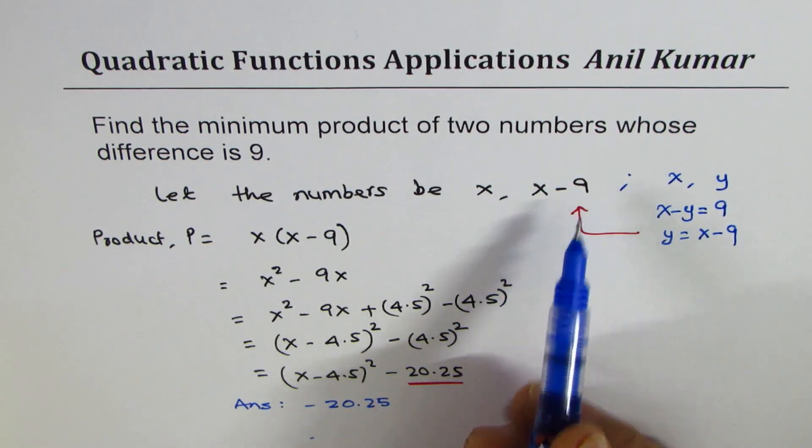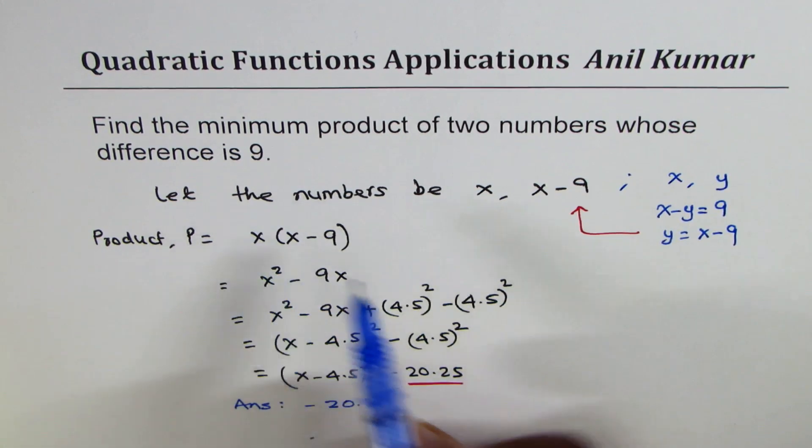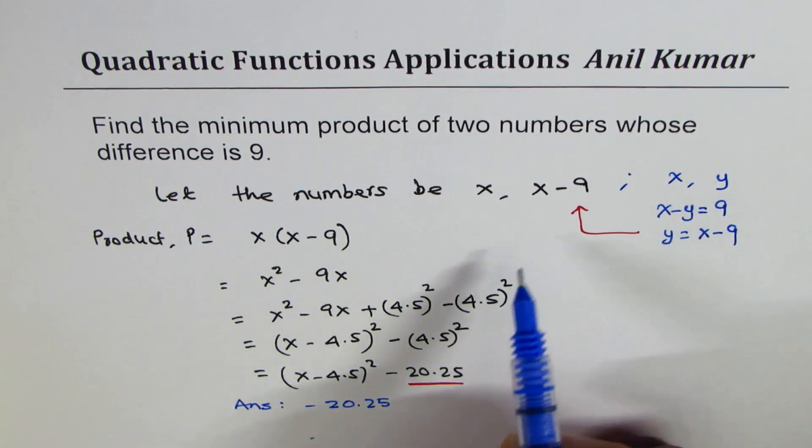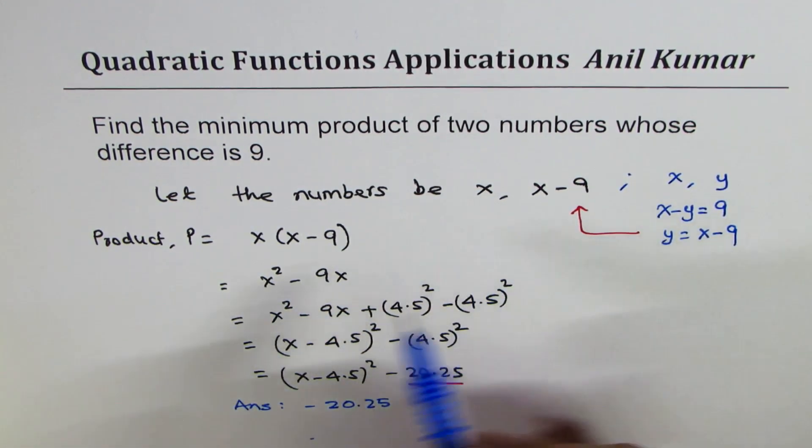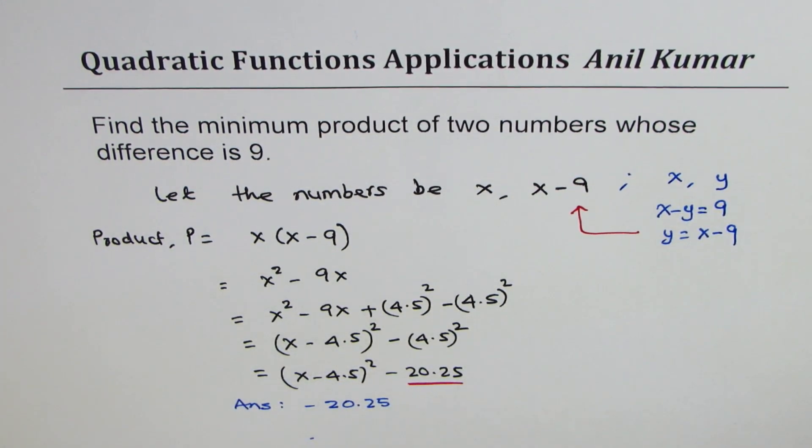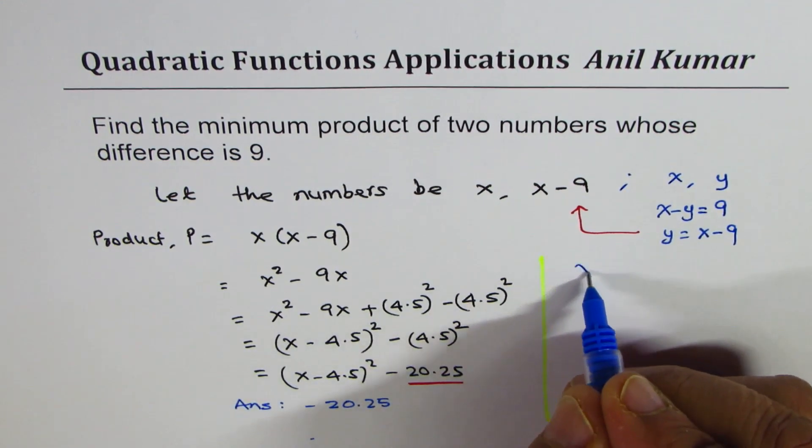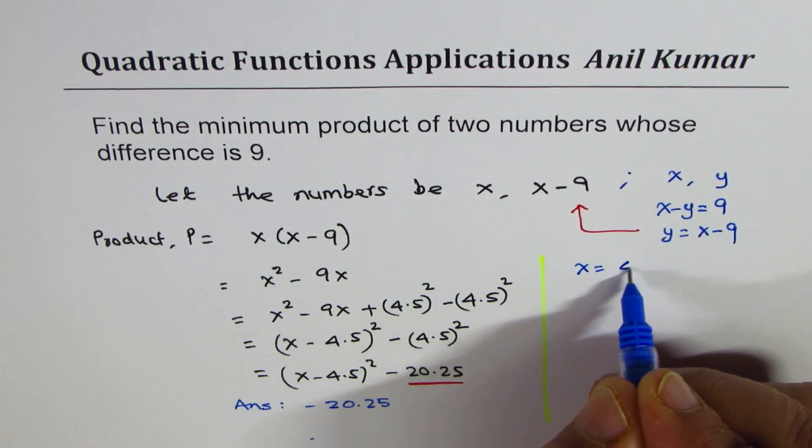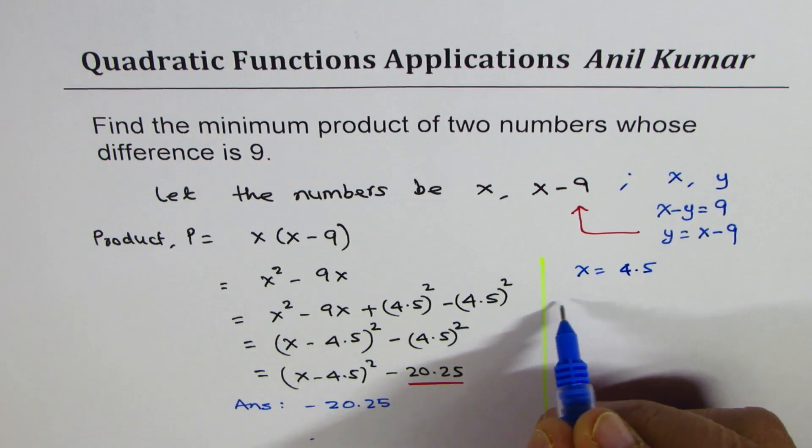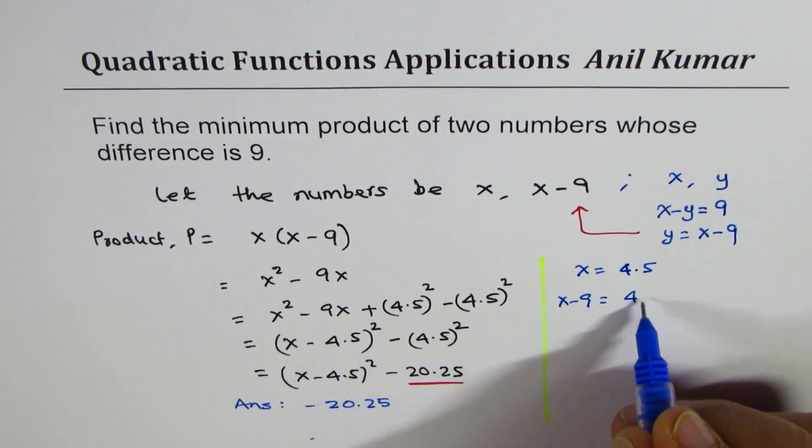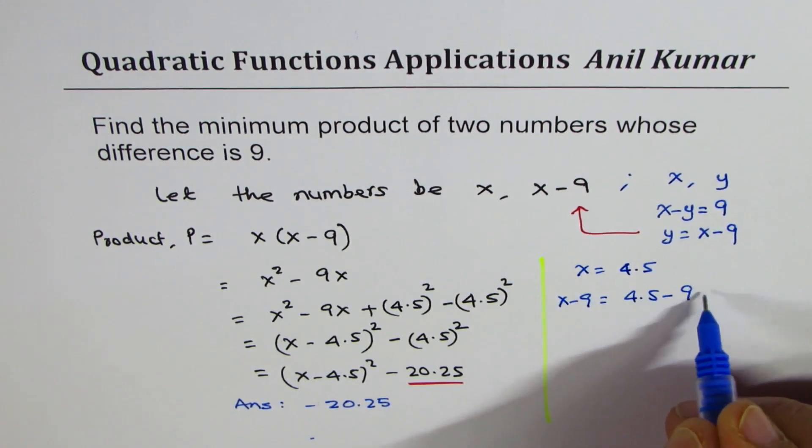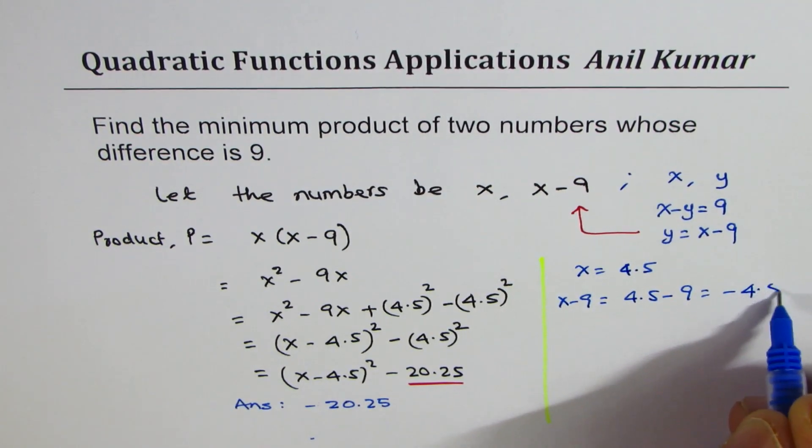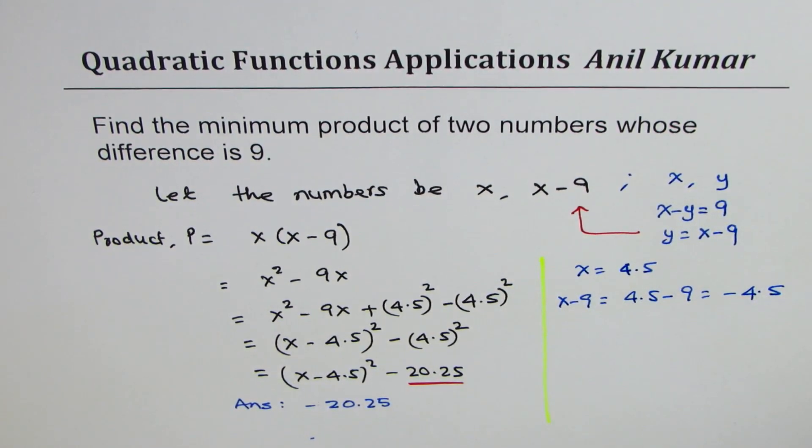Now we could have asked what are the two numbers. In that case, the two numbers would be, let me extend this, one number be X which is 4.5 and the other number which is X minus 9 will be 4.5 minus 9 which is minus 4.5. So these are the two numbers which will give you the minimum product.